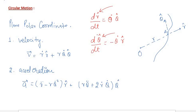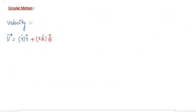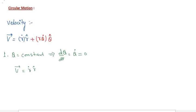Let us comment on the velocity in plane polar coordinates. The r times theta-dot times theta-cap term represents the tangential direction. Now let us take two conditions. The first: if theta equals a constant, then theta-dot equals zero, so the velocity is only in the r-cap direction — that is, the velocity is purely radial.